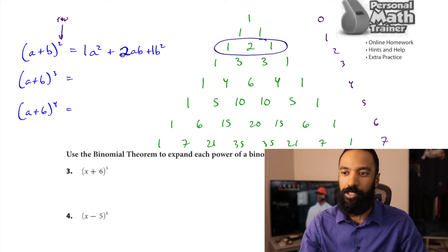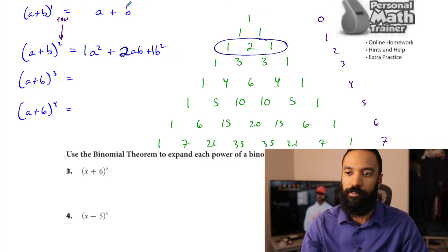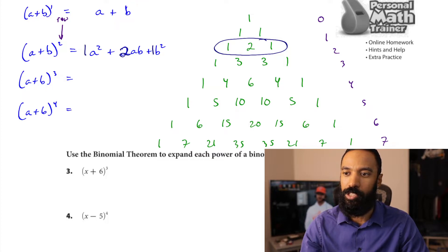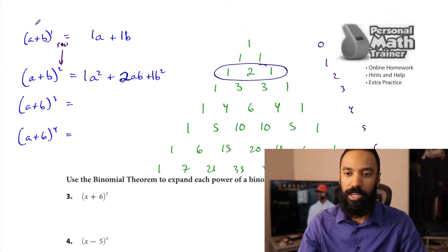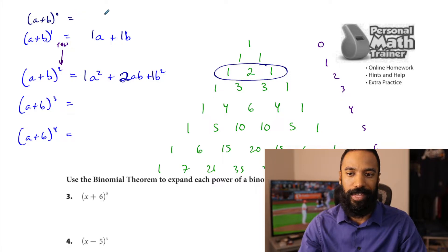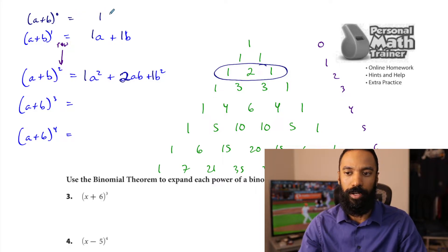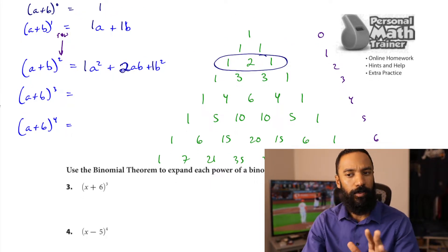These coefficients have everything to do with your binomial expansion. If you do it to the first power — a plus b to the first — that's one a plus one b. Row one right there is one and one. What's a plus b to the zero power? That's literally just one. And there it is right there. You can kind of see a pattern already with this.